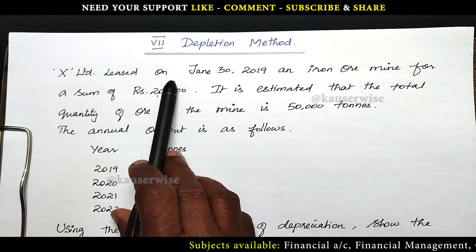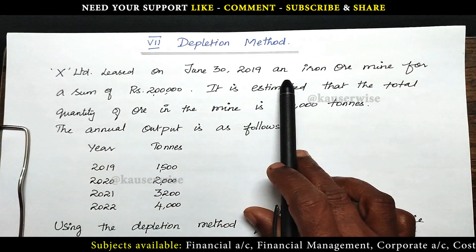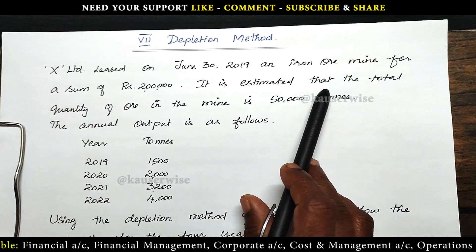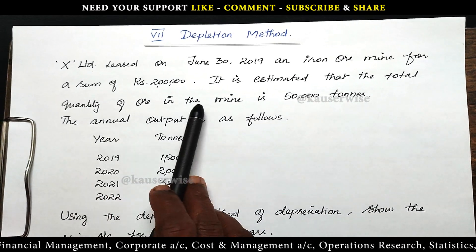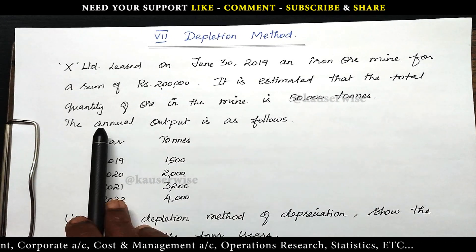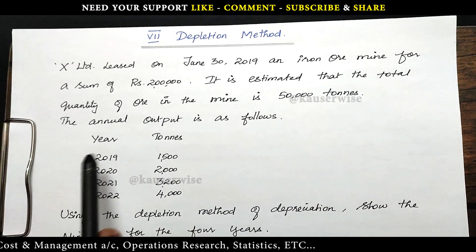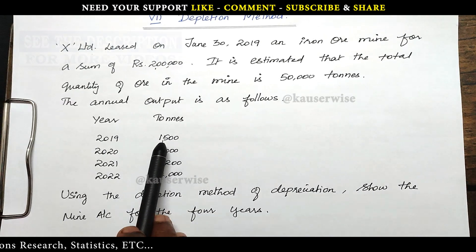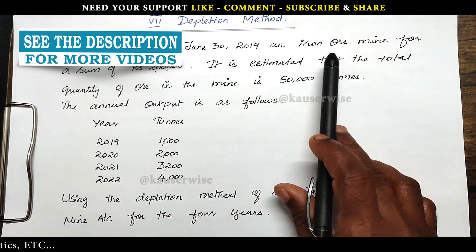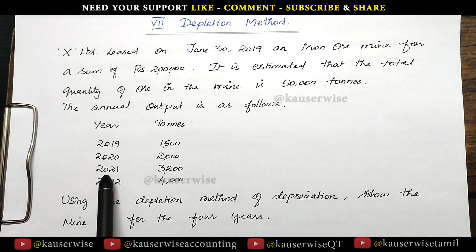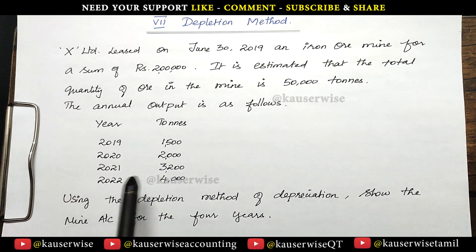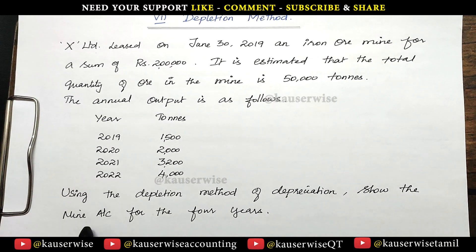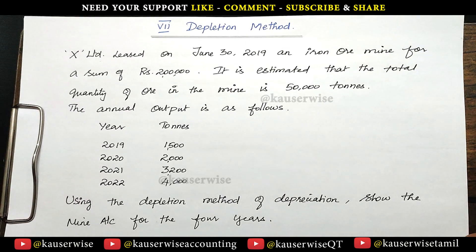X Limited leased on June 30th, 2019 an iron ore mine for a sum of rupees 2 lakh. It is estimated that the total quantity of ore in the mine is 50,000 tons. The annual output is as follows: Year 2019-20, 21, 22. First year: 1,500 tons extracted. Second year: 2,000 tons. Third year: 3,200 tons. Last year: 4,000 tons. Using the depletion method of depreciation, show the mine account for 4 years.